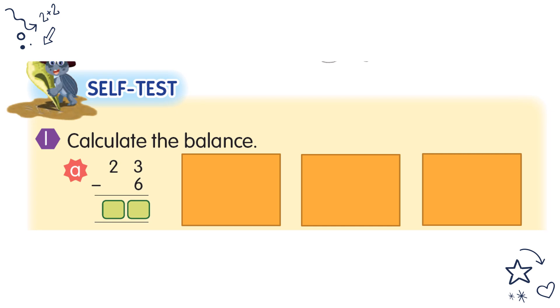So now we calculate the balance. Now we calculate. Number 1: 13 minus 6. 3 cannot minus with 6, isn't it? So we borrow from 2. This becomes 1 and this becomes 13. 13 minus 6 equals 7. Then this 1, write down 1. So your answer is 17.